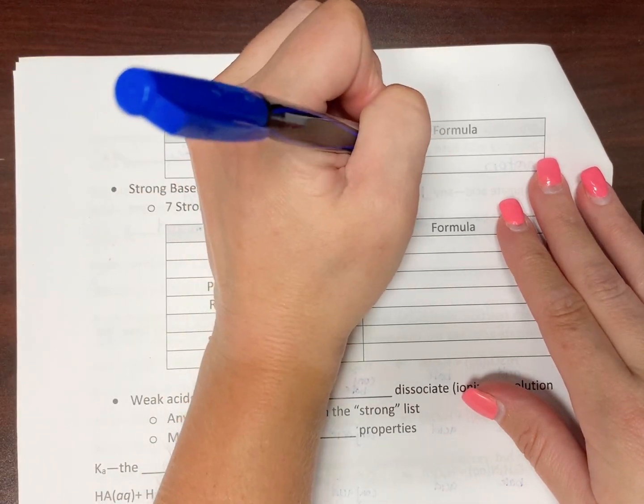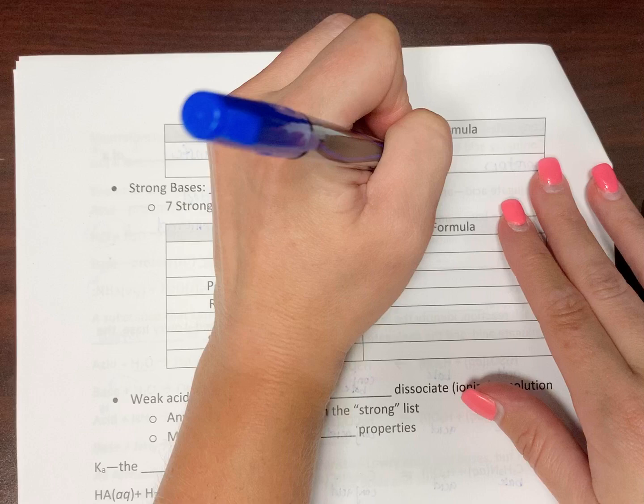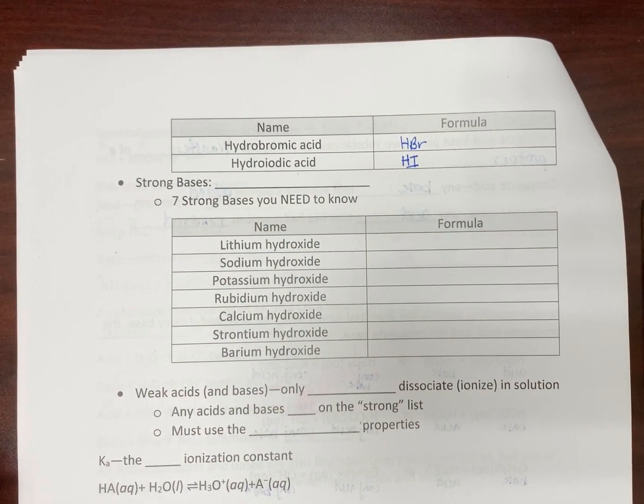Hydrobromic acid, HBr. Hydroiodic acid, HI. That's not high. That's not Hawaii.